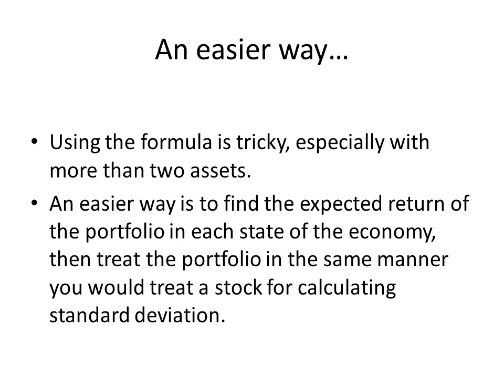Using covariance to calculate portfolio standard deviation can get complicated when we have more than two assets. For example, the same formula for three assets would be xA squared times the variance of A, plus xB squared times the variance of B, plus xC squared times the variance of C, plus 2xAxB times the covariance of A with B, plus 2xBxC times the covariance of B with C, plus 2xAxC times the covariance of A with C. Nobody wants to do all that calculation, so we need an easier way — finding the expected return of the portfolio in each state of the economy and treating the portfolio the same way you would treat a stock for calculating standard deviation.